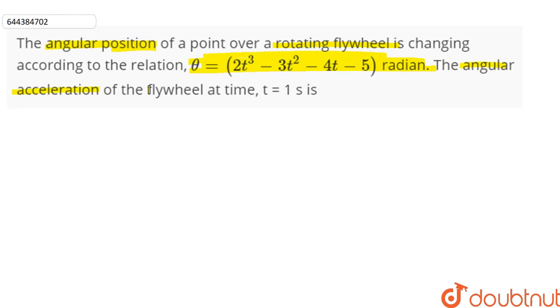The angular acceleration of the flywheel at time t equals 1 second is what we need to find. We have been given the relation of angular position with respect to time which is theta equals 2t cube minus 3t square minus 4t minus 5 radians.